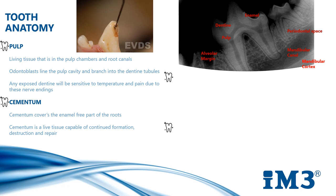Cementum covers the enamel-free parts of the root. It provides a point of attachment for the periodontal ligament. Cementum is a live tissue capable of continued formation, destruction and repair. It gets its nourishment from vessels within the periodontal ligament.